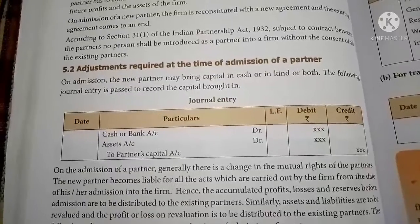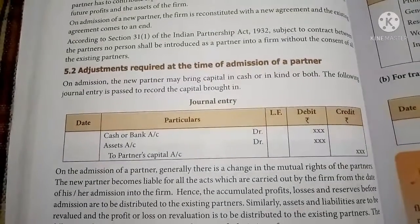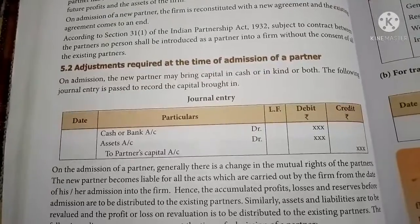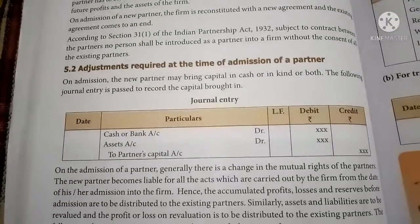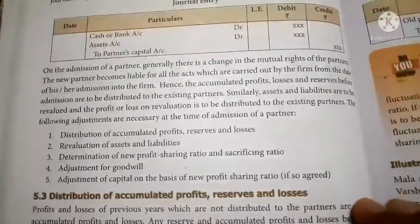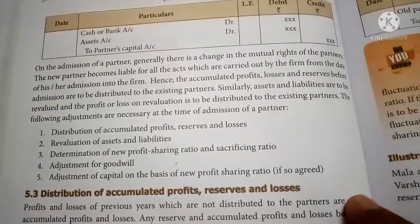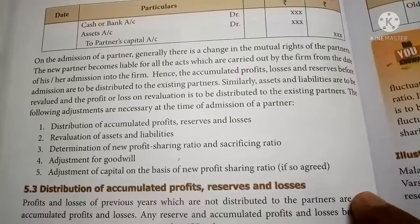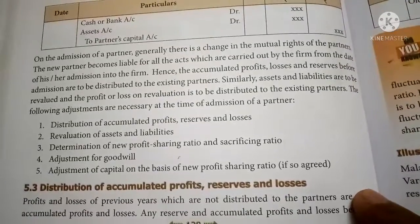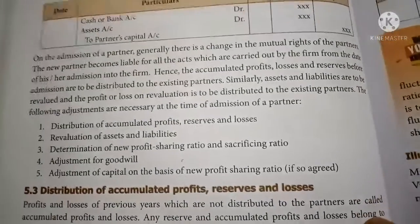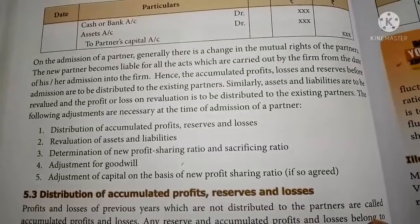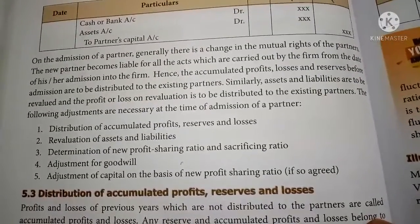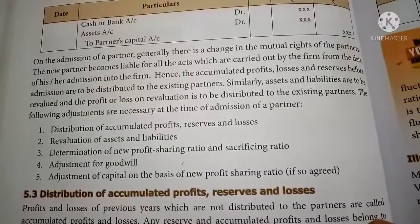The entry is: cash or bank account, or asset account, to partner's capital account. That is, the new partner may bring capital in cash, in kind, or both. The other adjustments at the time of admission are: number one, distribution of accumulated profit, reserve and losses; number two, revaluation of assets and liabilities; number three, determination of new profit sharing ratio.